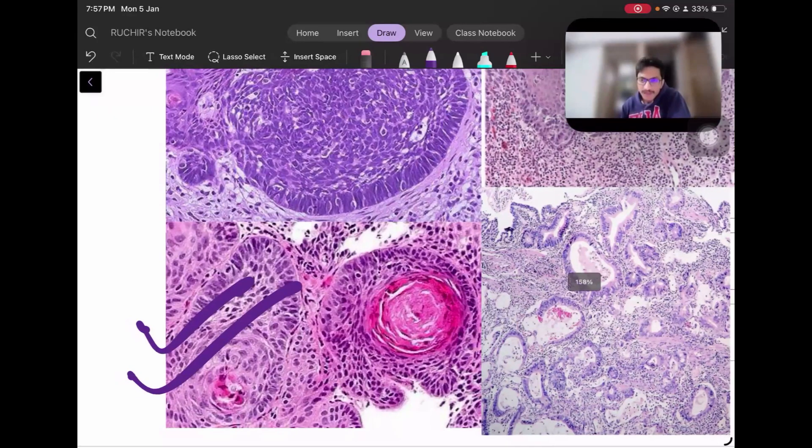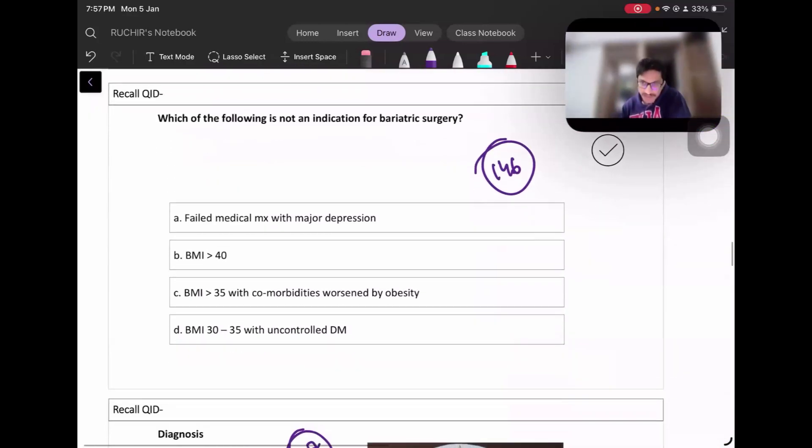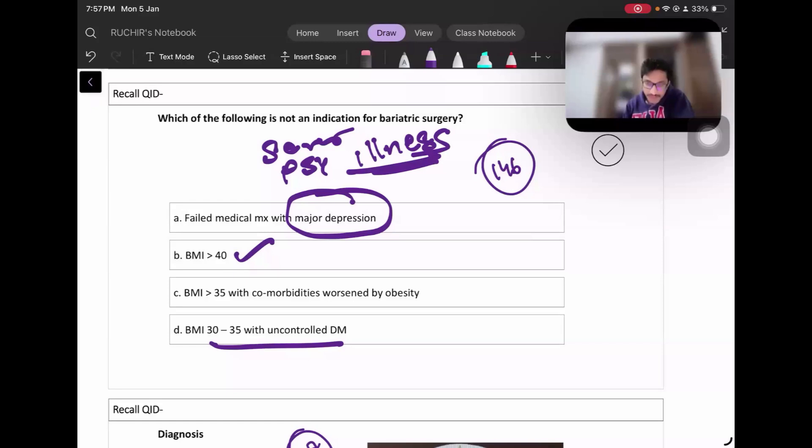Next question: which is not an indication of bariatric surgery? Are the options okay in this question? You do bariatric surgery in BMI above 40, BMI of 35 with comorbidities, uncontrolled diabetes. But with major depression or severe psychiatric illness, you don't do bariatric procedures because this patient needs to be motivated in the post-operative period for diet modification. This is not an indication for bariatric surgery.